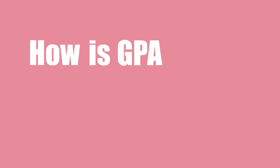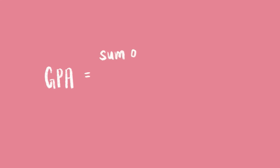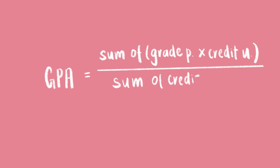Now, how is the semester GPA calculated? The formula for a semester GPA is the sum of grade points times credit units, divided by the sum of credit units for the modules examined in the semester.